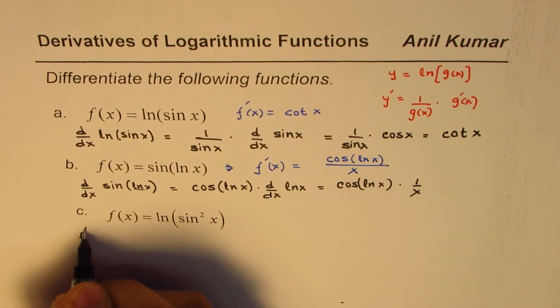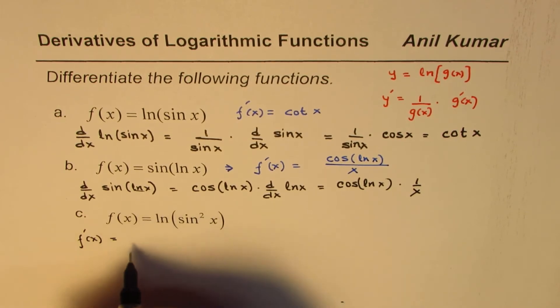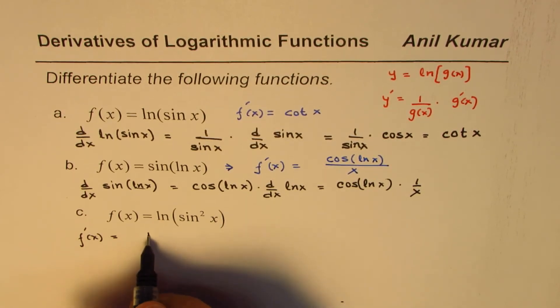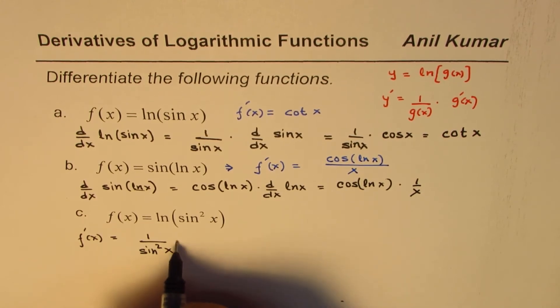So f dash x will be equals to, derivative of this will be straightforward, 1 over sine square x times derivative of sine square x.